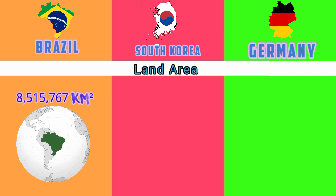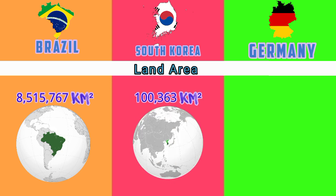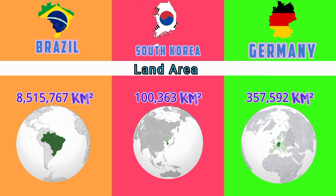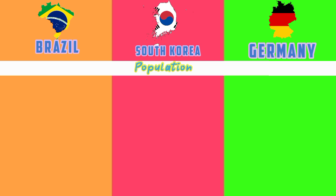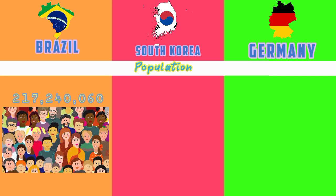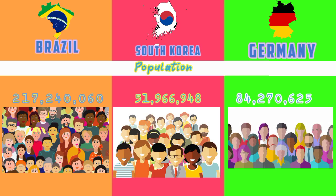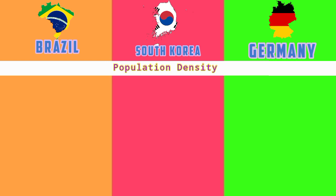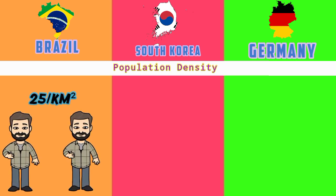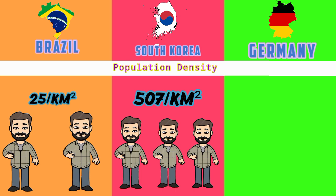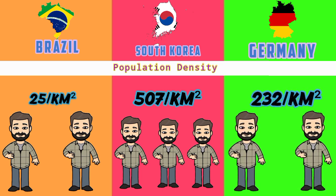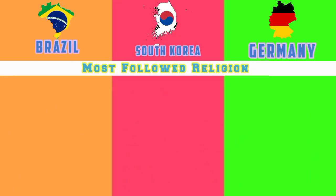Land area: Brazil 8,515,767 square kilometers; South Korea 100,363 square kilometers; Germany 357,592 square kilometers. Population: Brazil 217,240,060; South Korea 51,966,948; Germany 84,270,625. Population density: Brazil 25 per square kilometer; South Korea 507 per square kilometer; Germany 232 per square kilometer.